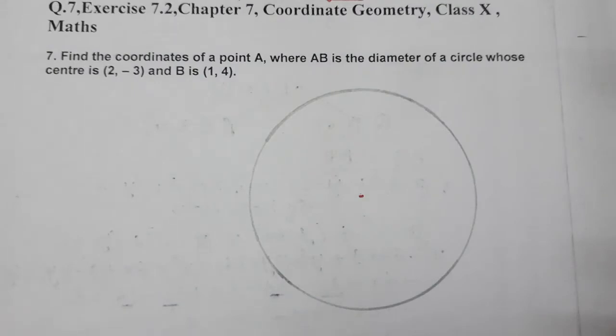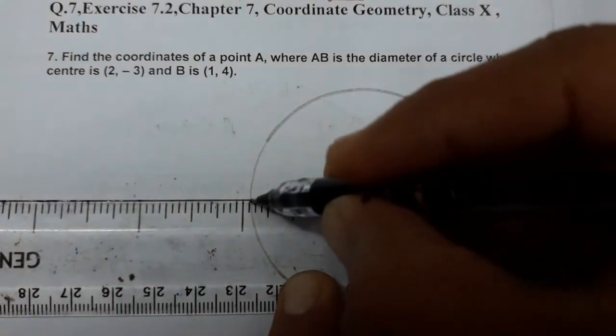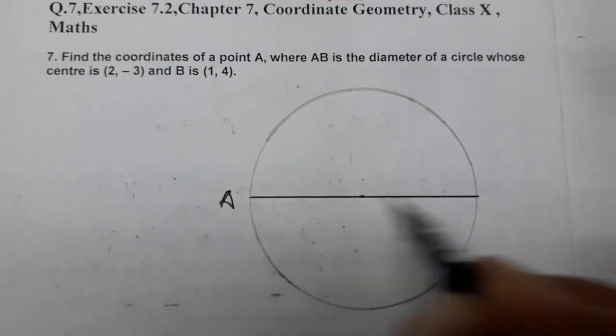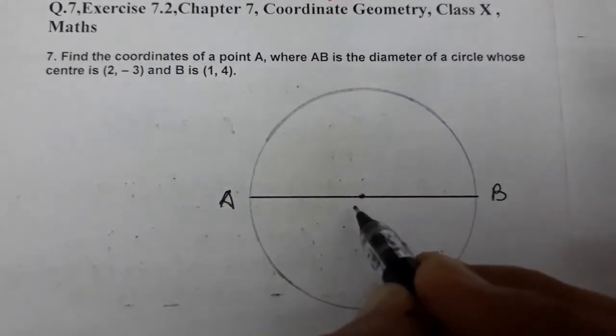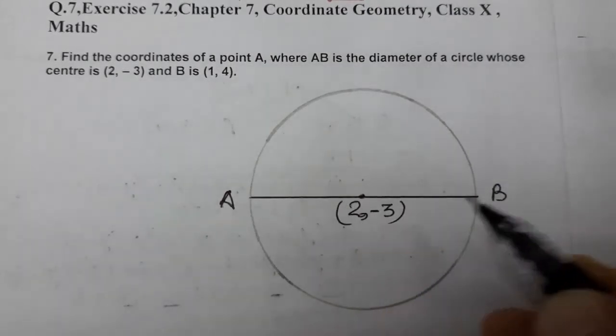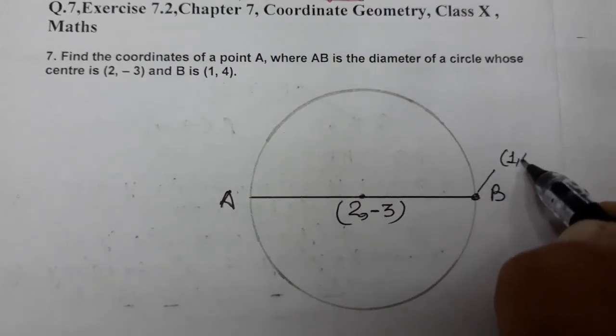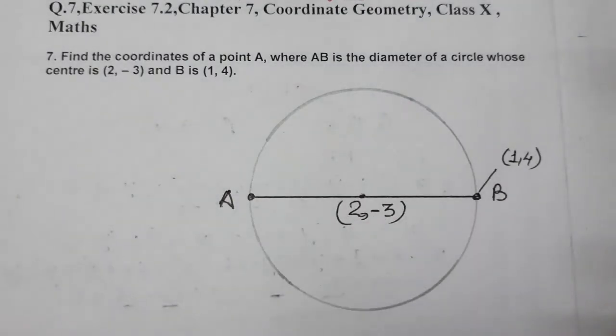AB is given to us as the diameter of a circle whose center is at the point (2, -3) and B is given to us as (1, 4). We need to find the coordinates of A.